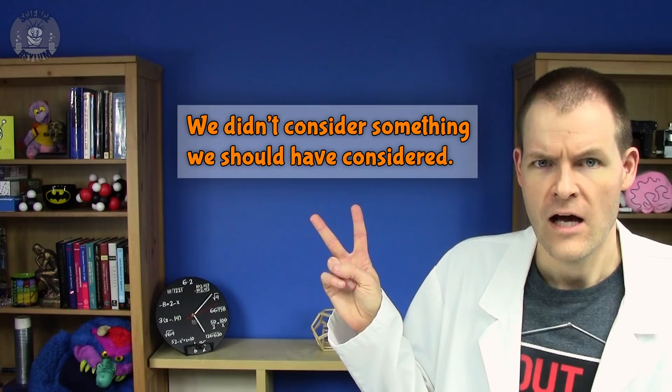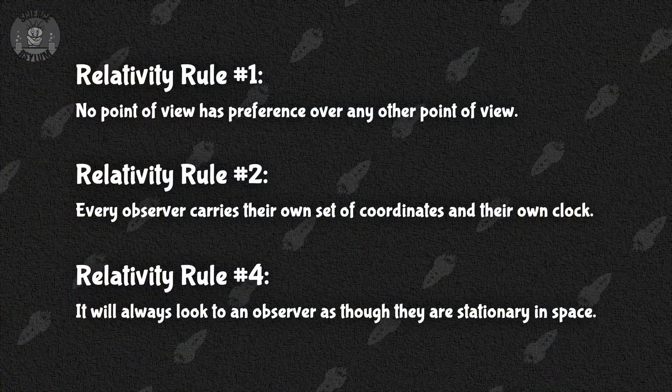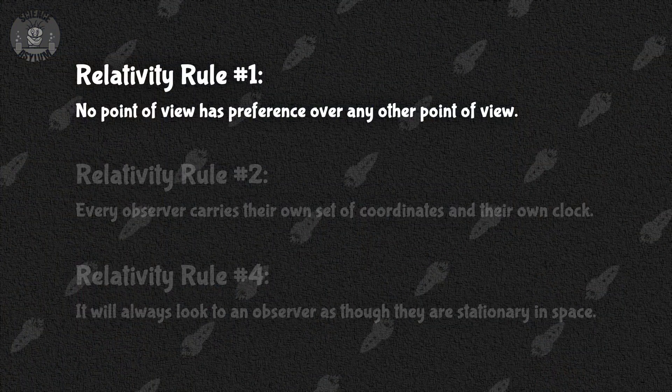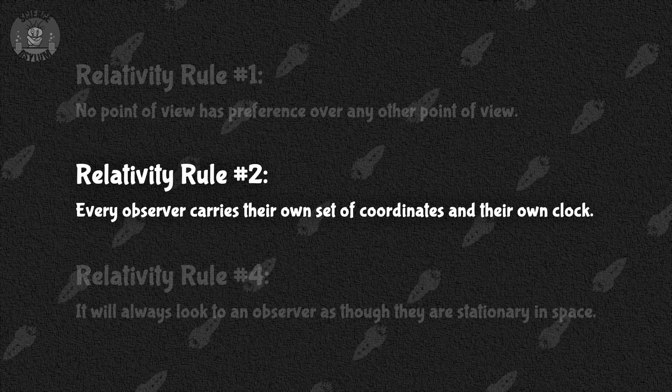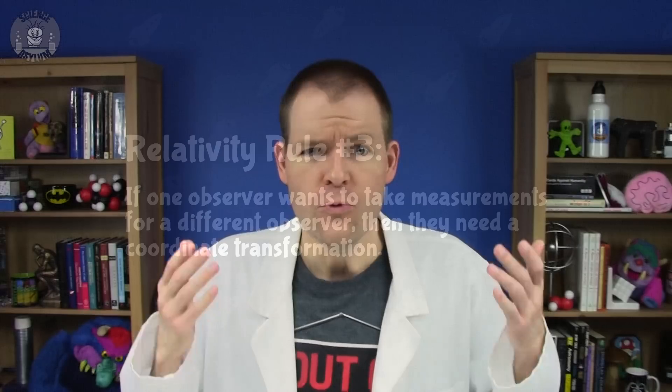Then what other mistake could we have made? I'm so glad you asked. Option two. We didn't consider something we should have considered. I feel like there's something missing here. One, two, four, five. Oh, it's rule number three. We forgot rule number three. We have to use the correct coordinate transformation.